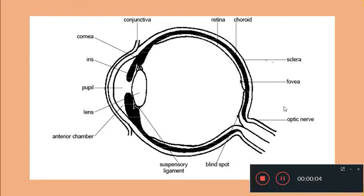Today we will discuss the development of eye in frog embryo. In frog, the eye works as the photoreceptor organ, and before going to the embryogeny of the eye, we will just go to the various structural features of frog eye.